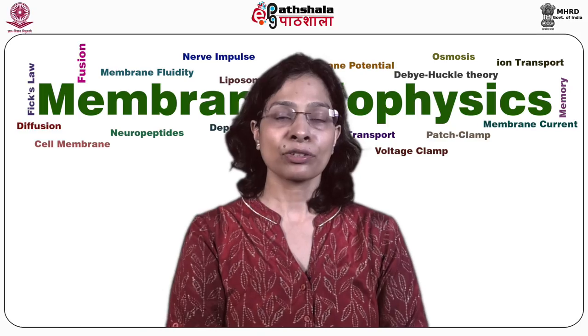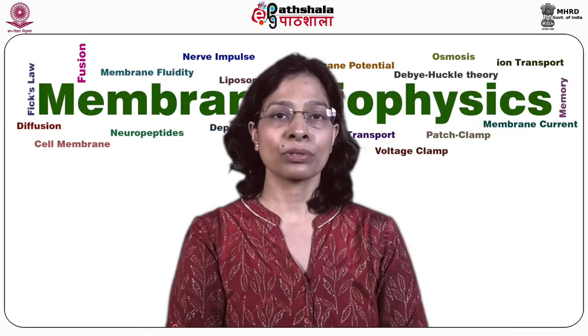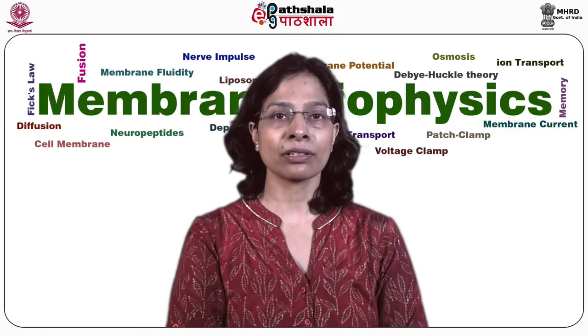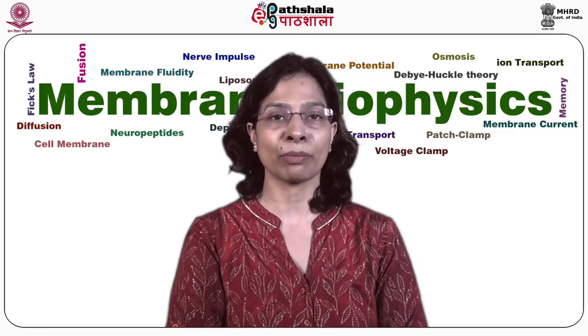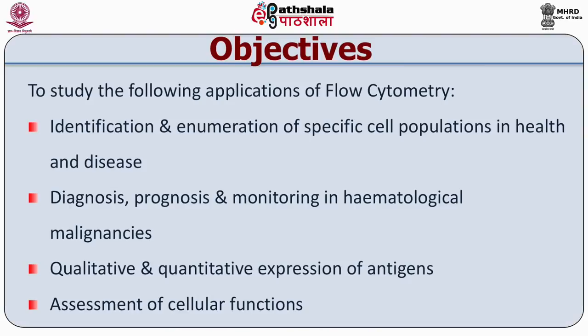Flow cytometry is the technology that allows rapid analysis of multiple characteristics of single cells in a qualitative and quantitative manner. Today we will study the following applications of flow cytometry. We will look at the application of identification and enumeration of specific cell subsets to differentiate the healthy from the disease states.